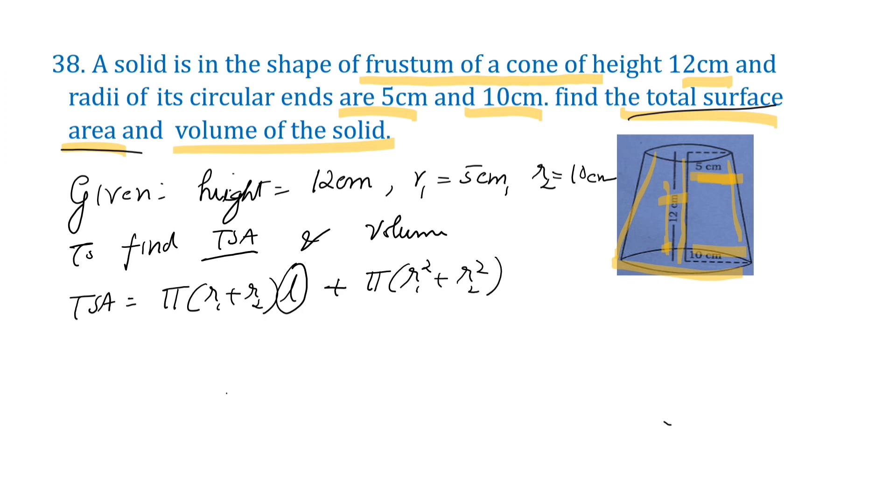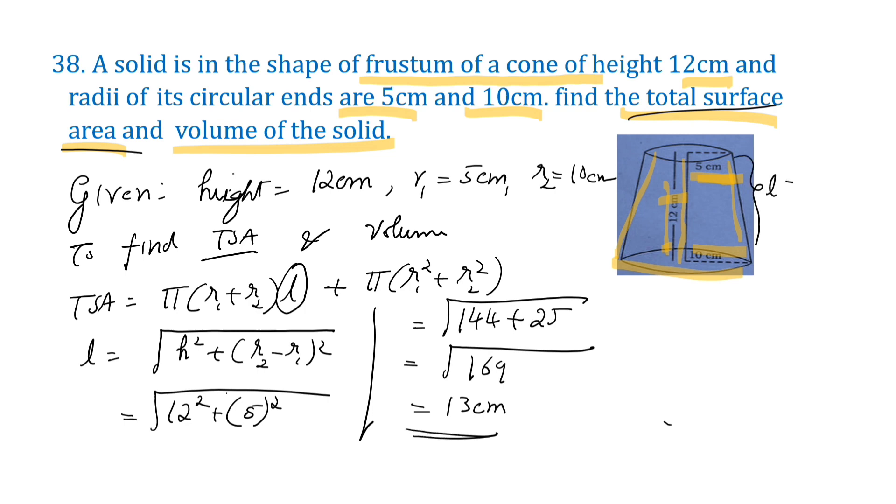Now let us find the slant height. L equals square root of h² plus (r2 - r1)². Here h is 12, so 12² equals 144. r2 is 10, r1 is 5, so (10 - 5)² equals 25. That equals square root of 169, which equals 13 centimeters. So slant height of the frustum of cone is 13 centimeters.